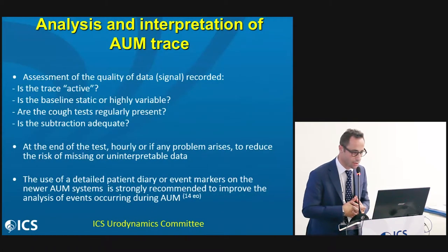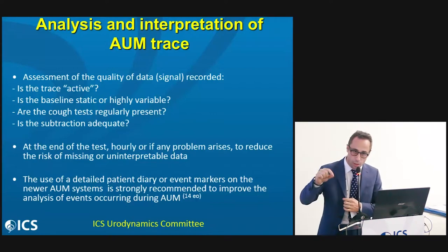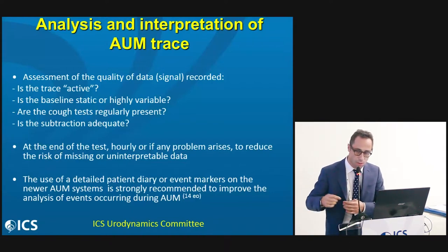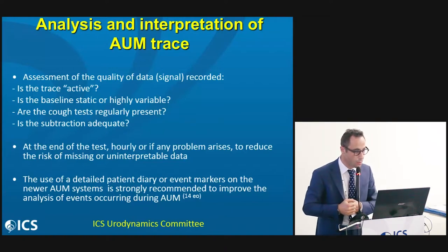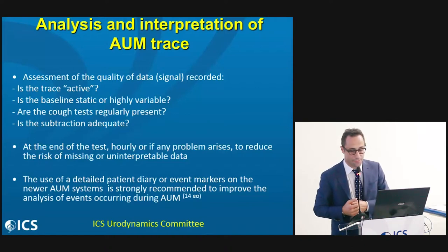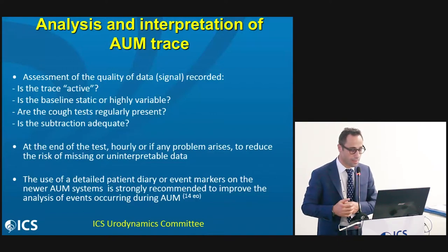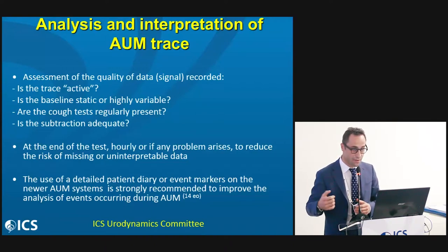Regarding interpretation of the AUM trace, in assessing the quality of recorded data, we first check if the trace is active — whether there is a fine second-to-second variation; we should never expect a flat line. Secondly, we check if the baseline is stable or highly variable. We check whether the cough test is regularly present and finally whether there is good subtraction. This quality control must be ensured at the end of the test and every hour. The use of a detailed patient diary or event marker is recommended to improve trace analysis.